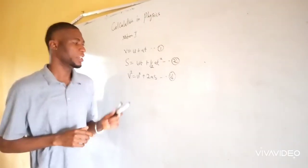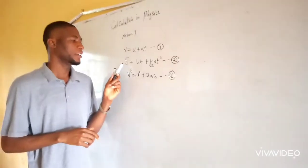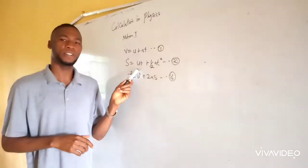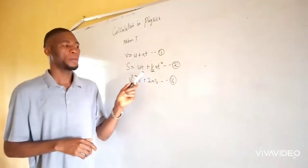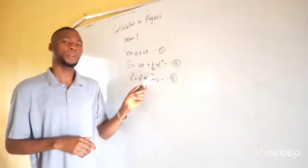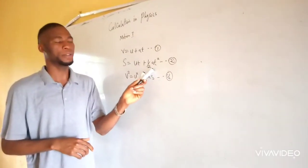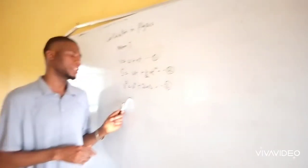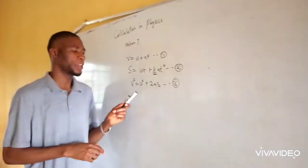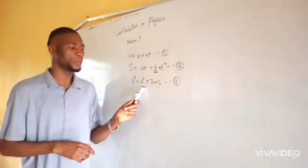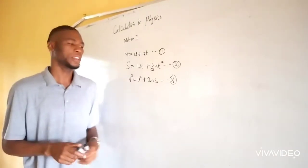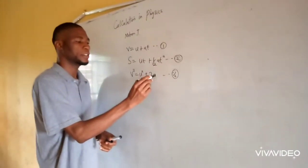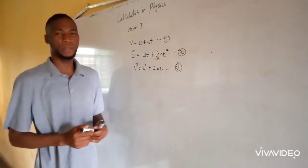This is the first formula for calculating motion. The second one: distance is equal to the initial velocity times time, plus half times acceleration and t-squared, which is the time. The third equation: v-squared equals u-squared plus 2as.